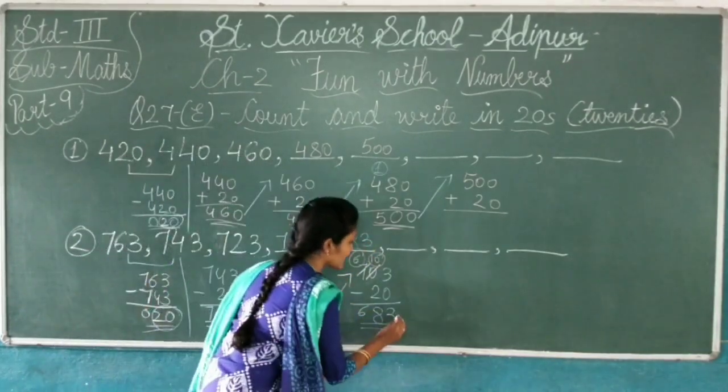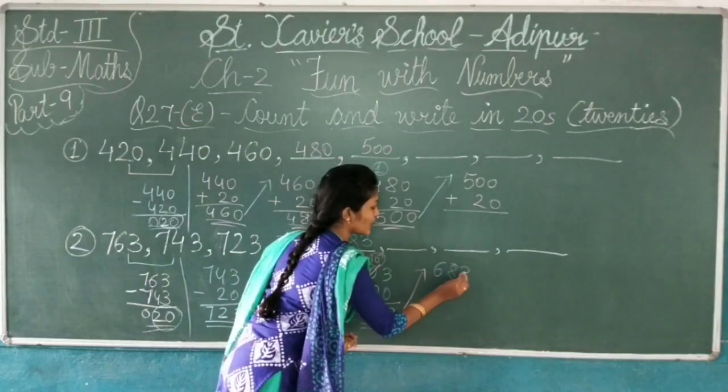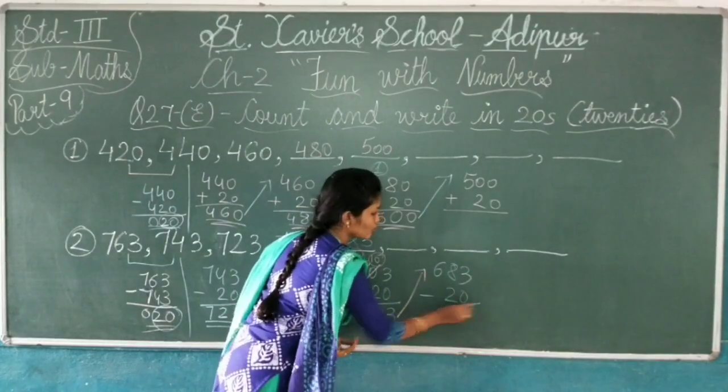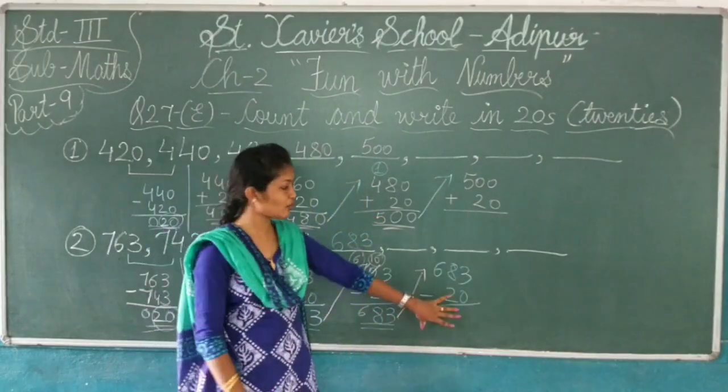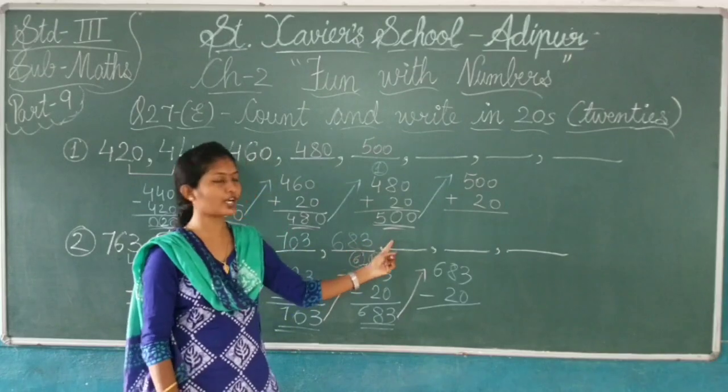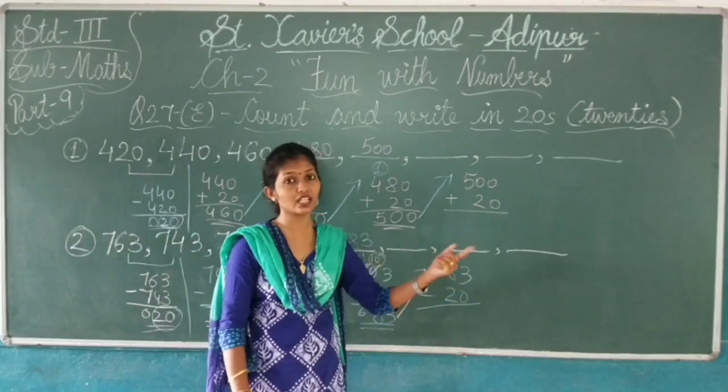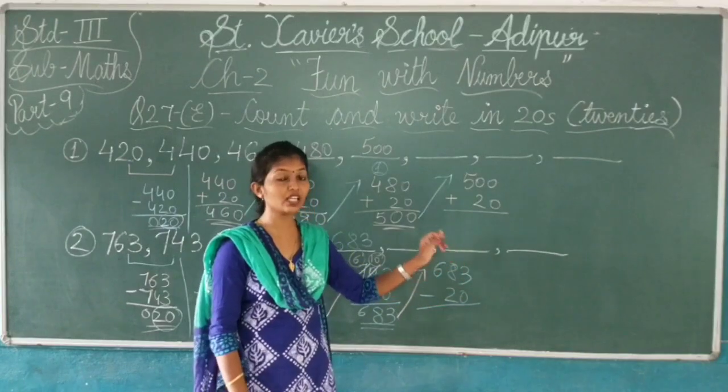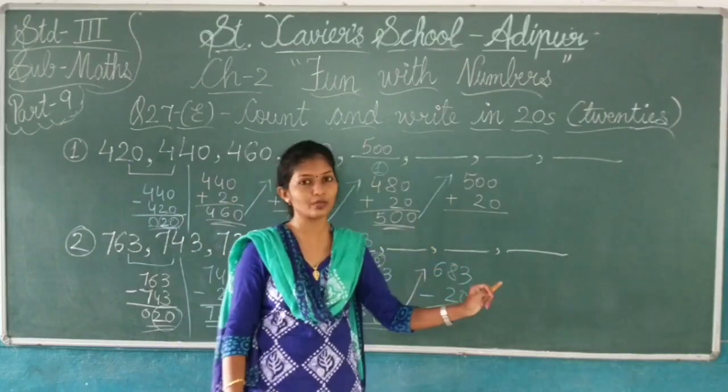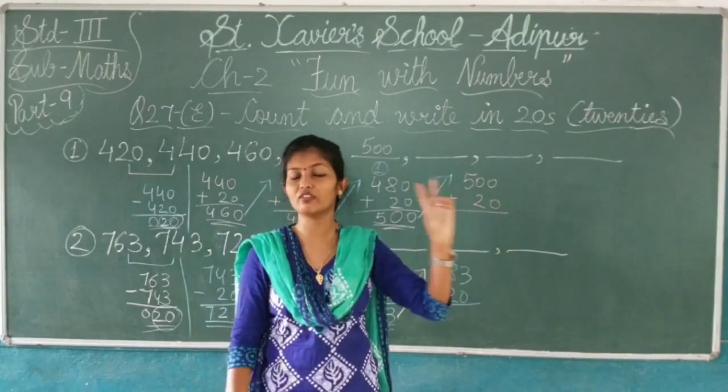Now again I will take this 683 minus 20. Now whatever answer you get here, you write here. 83 will remain, and that number you minus 20. Then that answer you write here, and like this you complete.